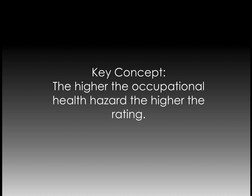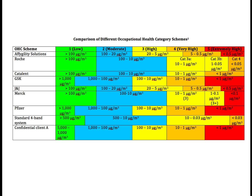One of the key concepts when dealing with occupational health categories is: the higher the occupational health hazard, the higher the rating. There are many different occupational health category schemes. For example, in this chart you see nine different OHC schemes. Here at Affigility Solutions, on a weekly basis we deal with six or seven different schemes.